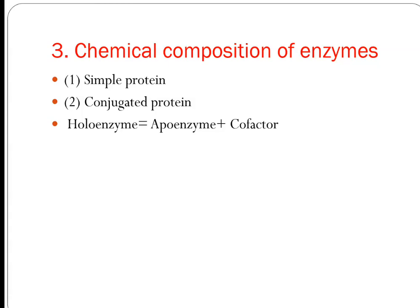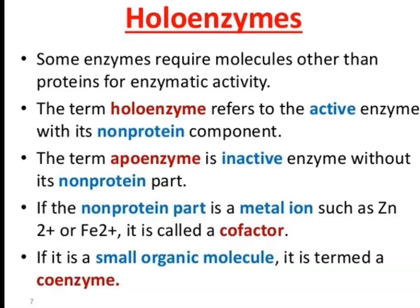Chemical composition: Simple enzyme is a simple protein. Conjugated protein forms a whole enzyme, which is Apoenzyme plus a co-factor. The term 'whole enzyme' refers to the active enzyme with the non-protein component. The term 'Apoenzyme' is the inactive enzyme without its non-protein part. If the non-protein part is a metal ion such as zinc or iron, it is called a co-factor.